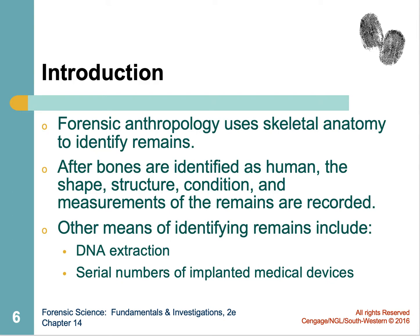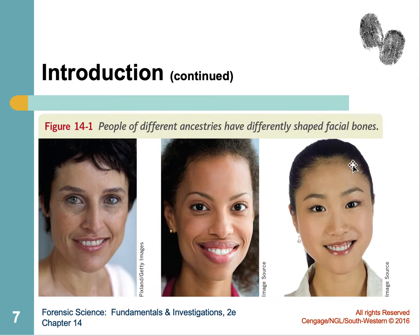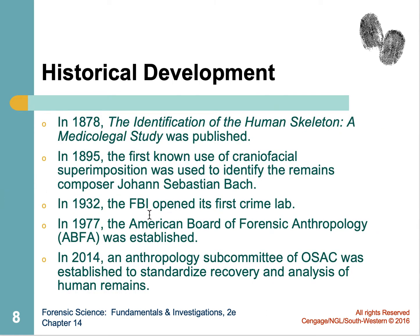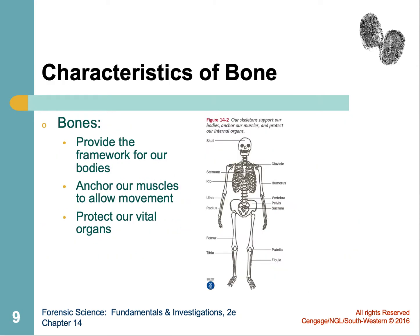There's a biological profile that bones can create about an individual. One is ancestry — the skeletal structures are slightly different for different ancestry between Caucasian, African, and Asian. It's been about 200 years or so that they've been using anthropology to help understand crime and things like that.